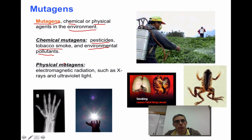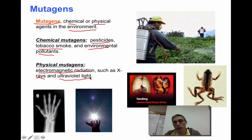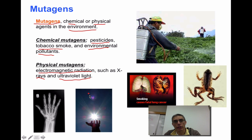Physical mutagens are things that aren't chemical in nature but more physical — you're exposed to them. Electromagnetic radiation would be one, such as X-rays and ultraviolet light or UV rays. If you've had repeated X-rays over many years, repeatedly exposing your cells to such X-rays could cause a change in that genetic material. And if you like to tan, you're constantly influencing your cells with UV radiation, which can also have an adverse effect on your cells.